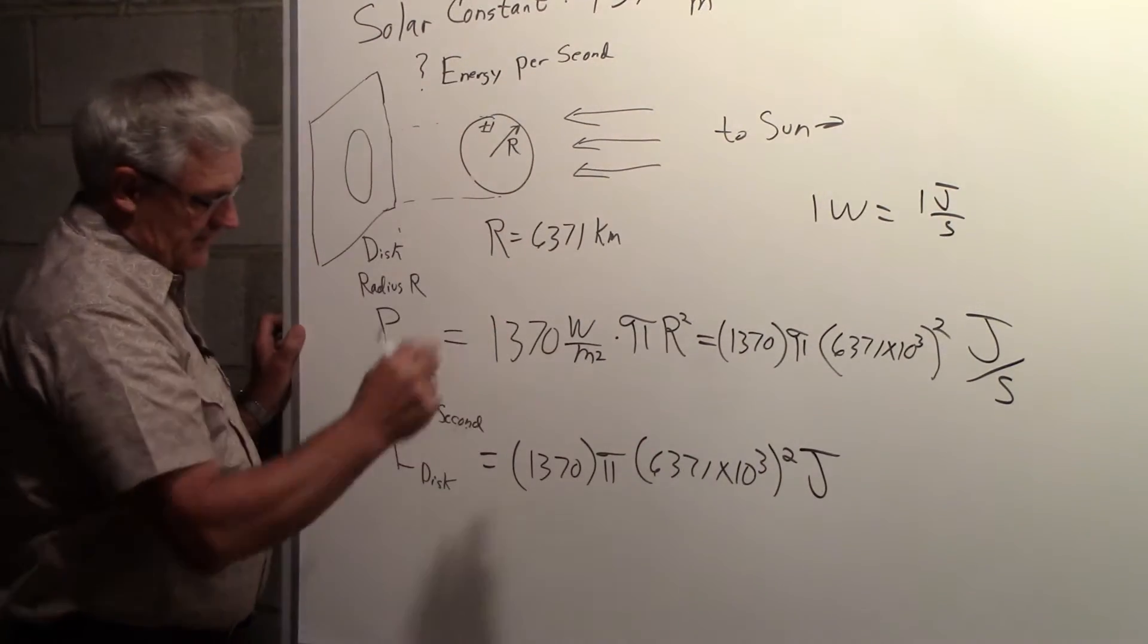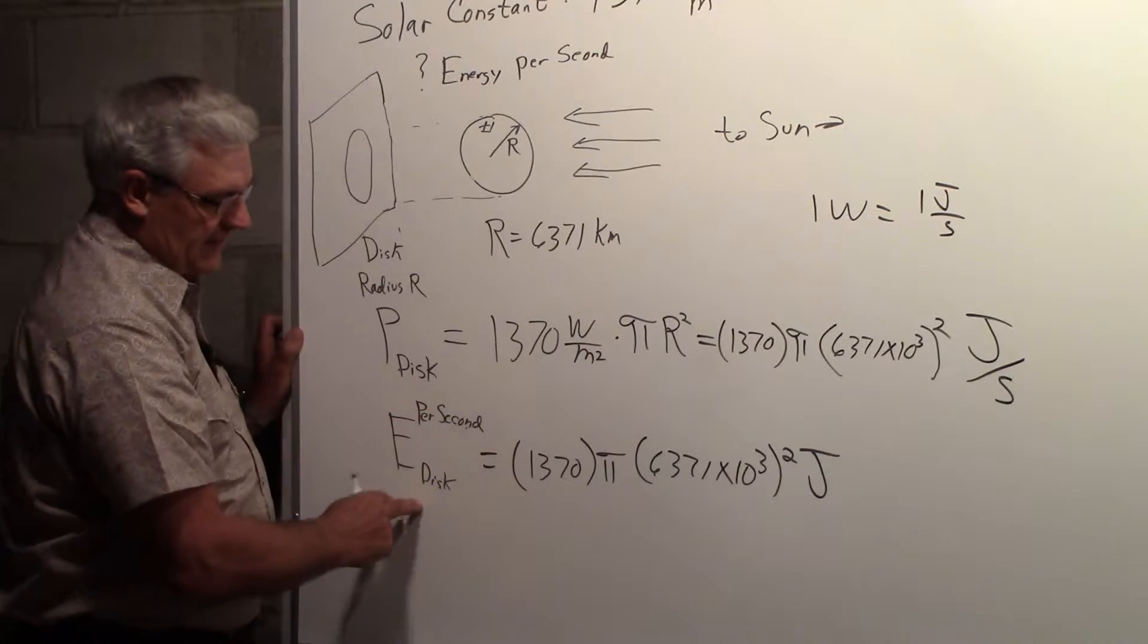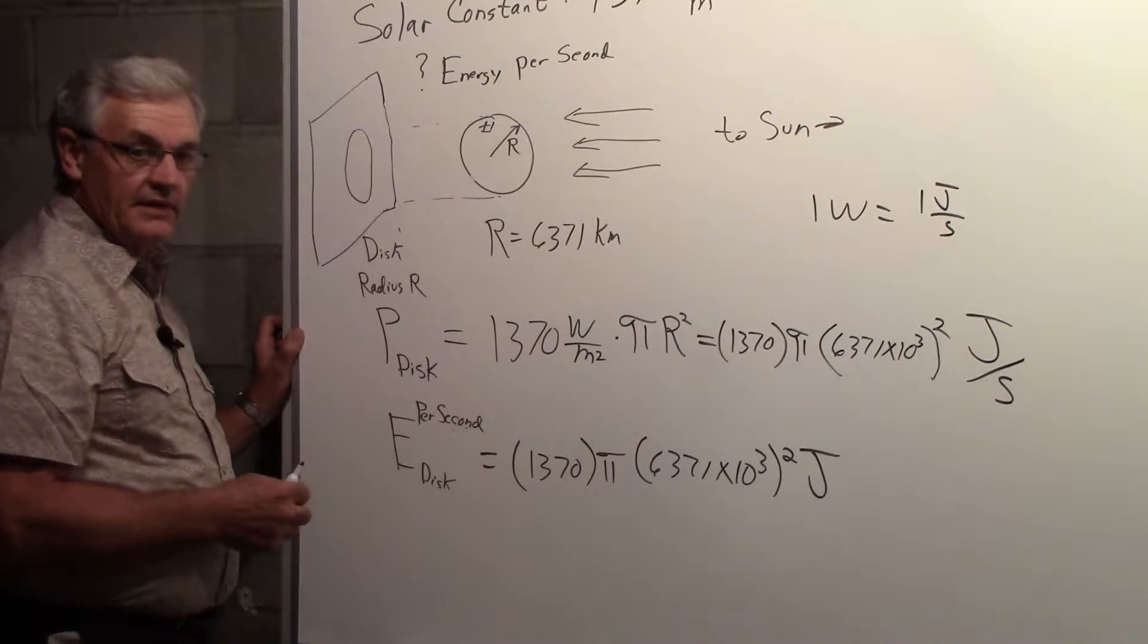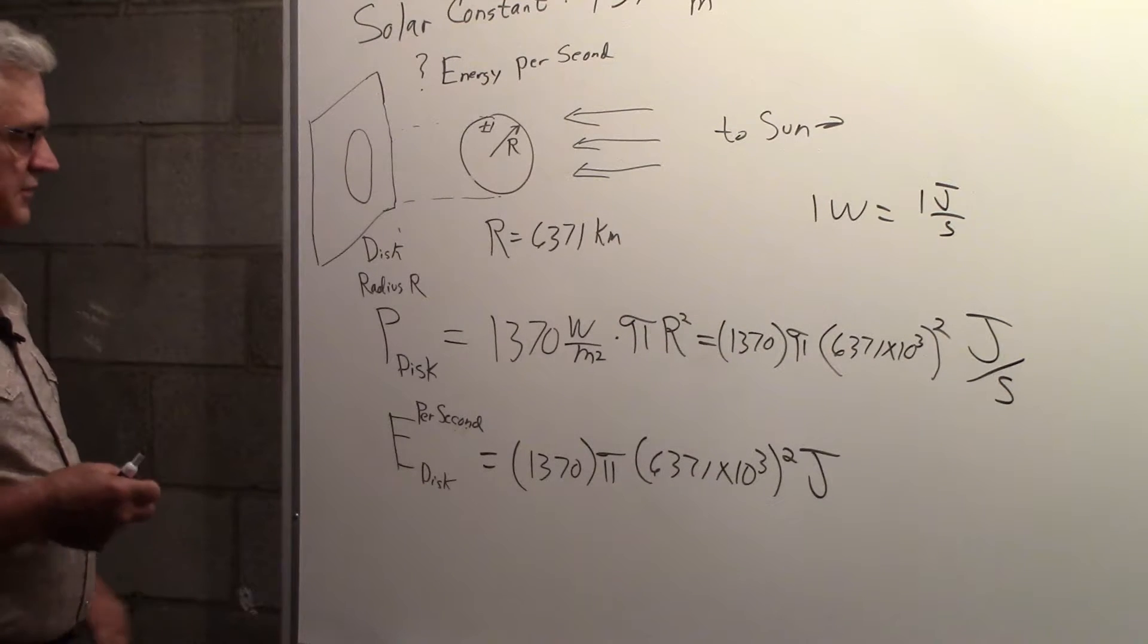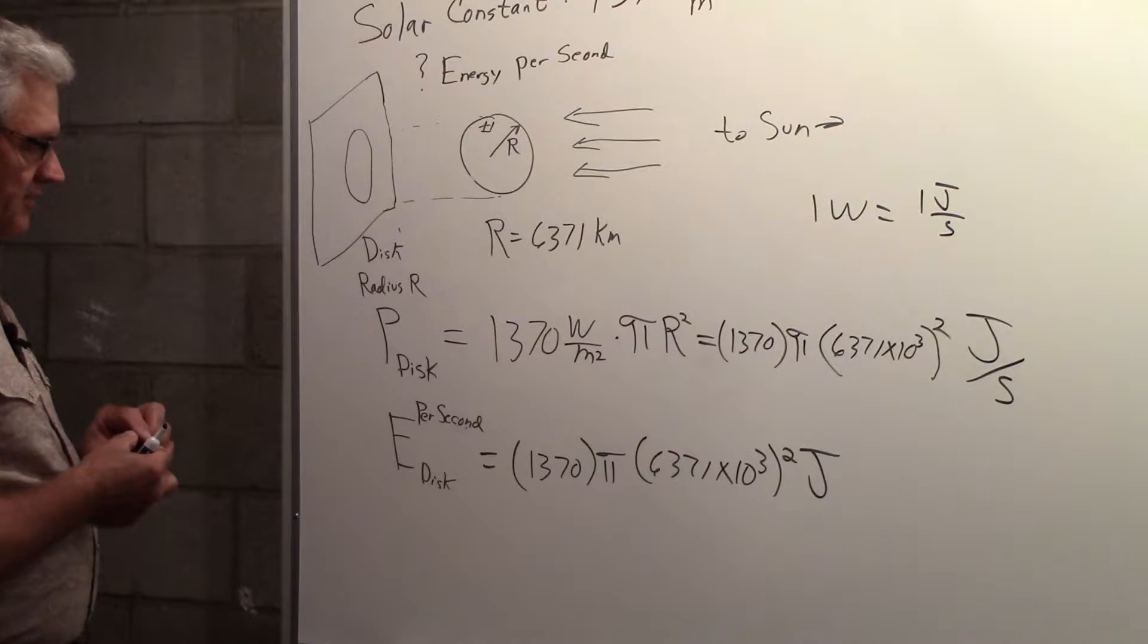Joules. We're just considering per second now, so we're showing the energy per second falling on that disk would be that large amount expressed in joules.